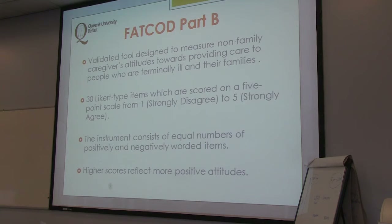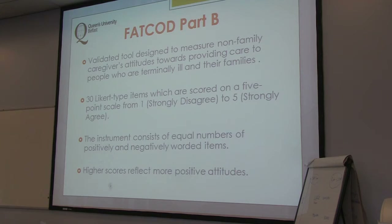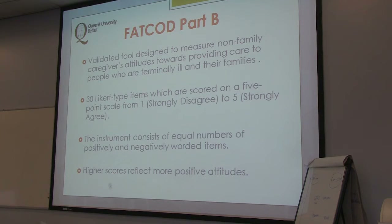The FATCOD is a validated tool designed to measure non-family caregivers' attitudes towards providing care to those who are terminally ill and their families. Catherine Fromant designed this tool, defining a non-family caregiver as any professional or non-professional outside of the patient's family. It consists of 30 Likert-type items scored on a five-point scale — strongly disagree, disagree, uncommitted, agree, or strongly agree. It consists of equal numbers of positively and negatively worded items, and a higher score indicates a more positive attitude towards end of life care. The maximum score students could get was 150.